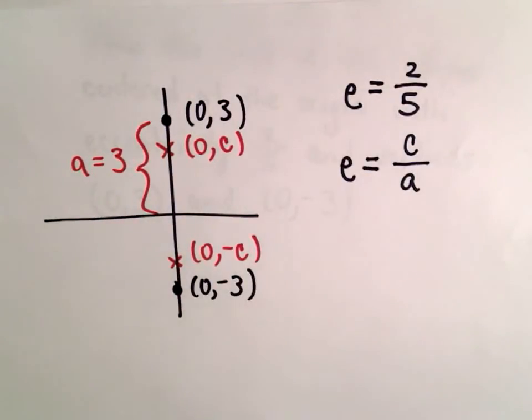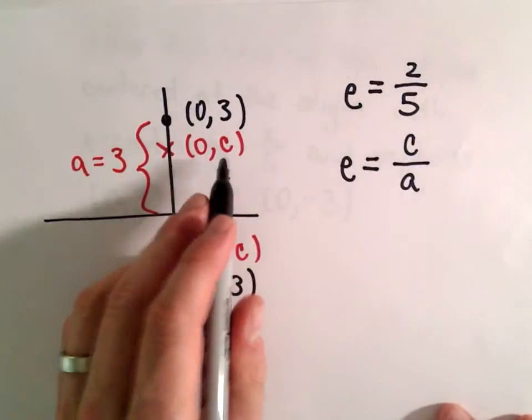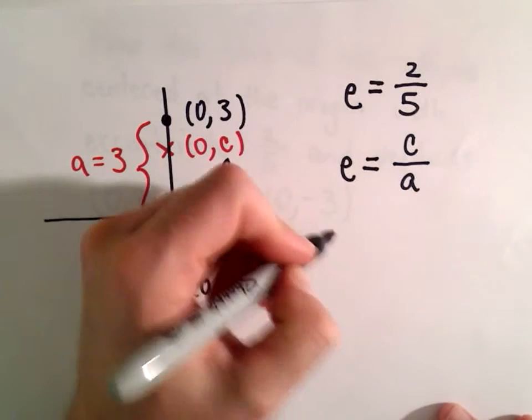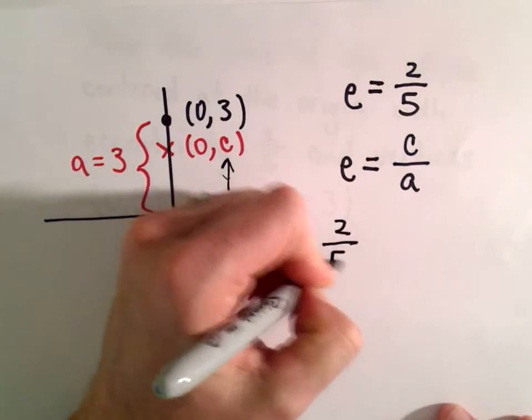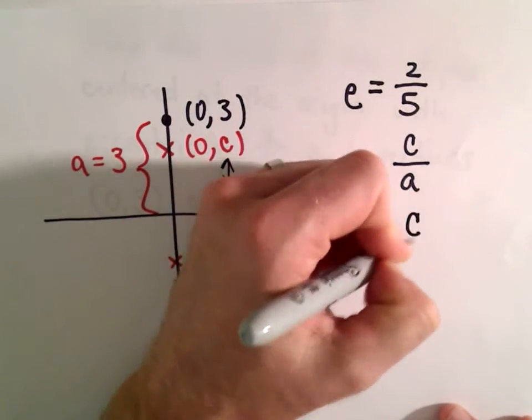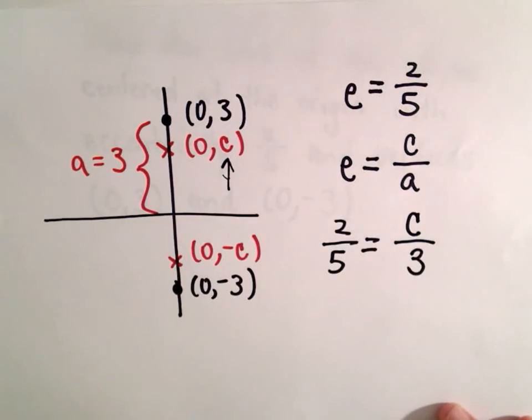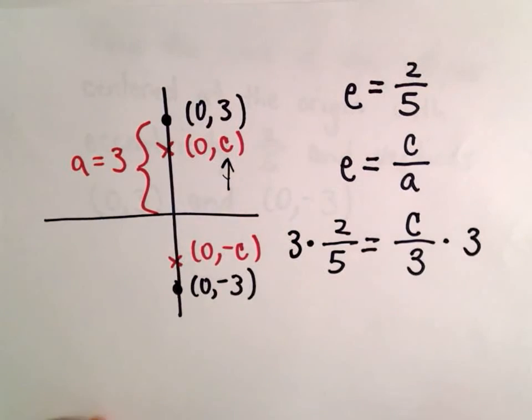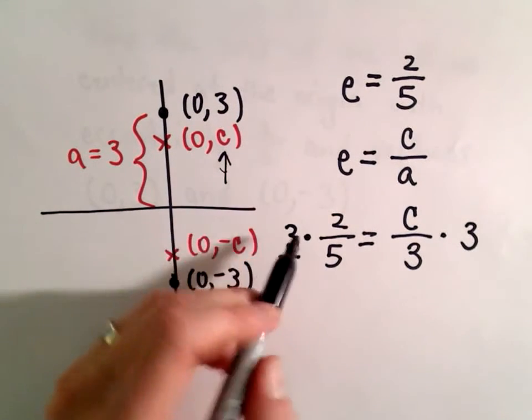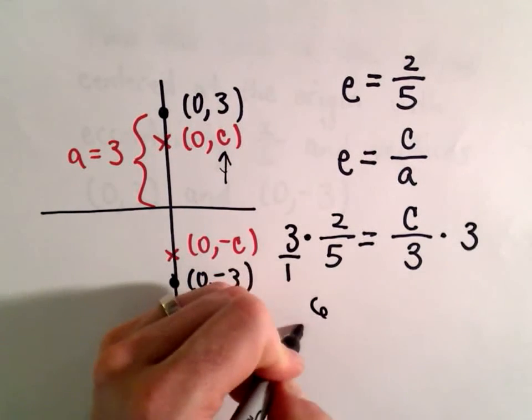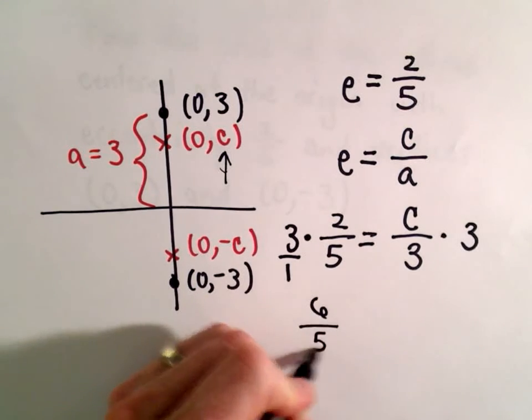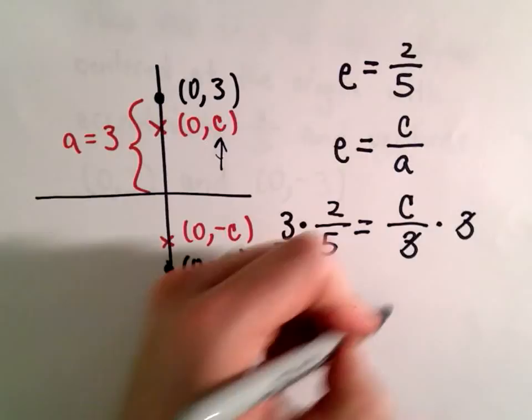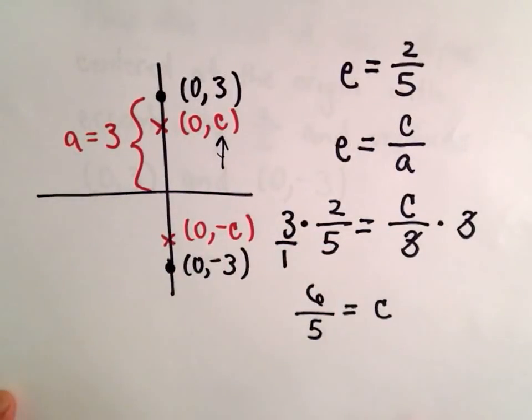So now we can simply use this to solve for c. And once we get c, we'll know what our foci are. So on the left, we have 2/5 equals c over a. Again, we said a is equal to 3. We can just multiply both sides by 3. Well, on the left side, we'll have 3 times 2, which is 6, over 5. On the right side, the 3s will cancel out. And we'll get that c equals 6/5.